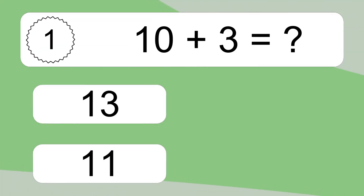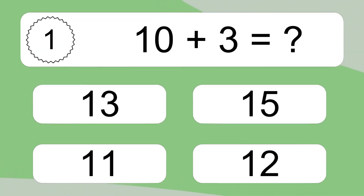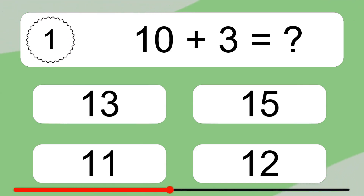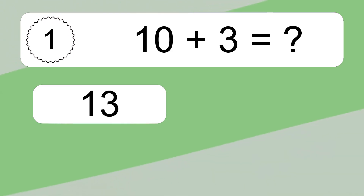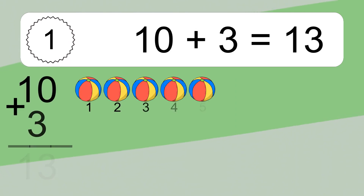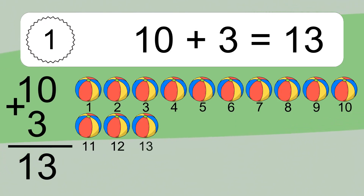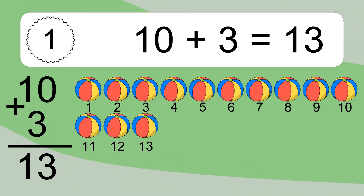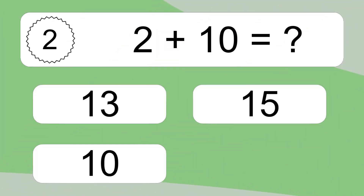10 plus 3 equals what? 10 plus 3 equals 13. Let's count it. 1, 2, 3, 4, 5, 6, 7, 8, 9, 10, 11, 12, 13.